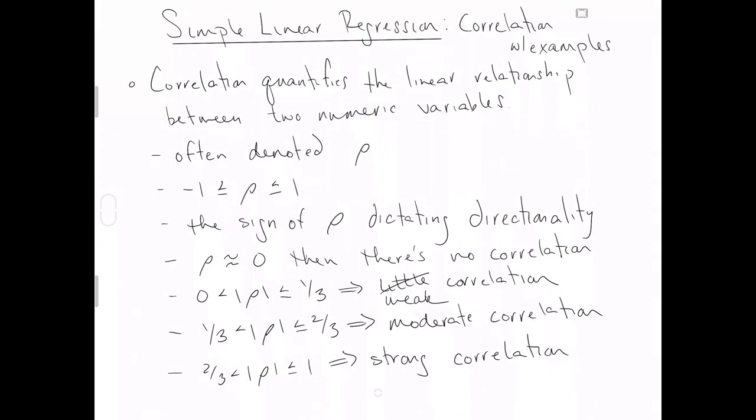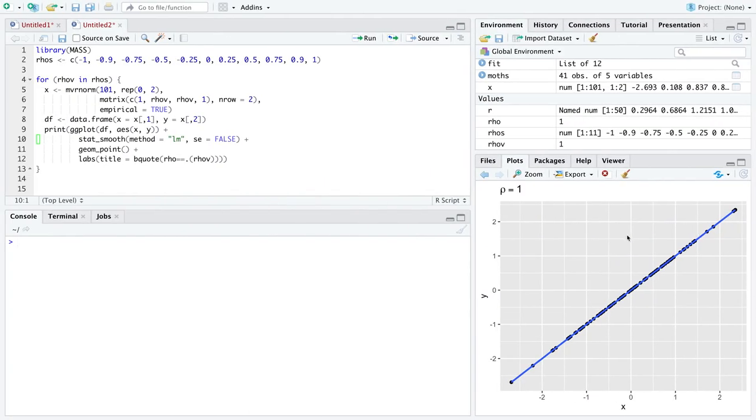Now, the way I've been encouraging us to think about this quantification of the strength of the relationship is by imagining a scatter plot in front of you, and then the simple linear regression line through the data, and then asking the question, roughly what proportion of observations fall on that line.